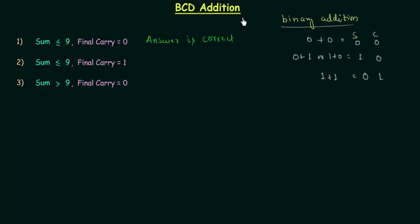In BCD addition we have to focus on our answer. We have to check whether our answer is correct or not, and the answer depends on two things: the sum and the final carry. Depending upon their values we have three cases. In the first case, if sum is less than or equal to 9 and final carry is equal to 0, the answer is correct.